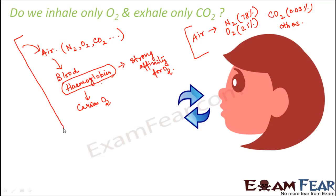What we inhale is not only oxygen but a mixture of gases. Since our body needs oxygen, it will selectively take oxygen. What happens to the other gases? All the other small amounts of gases present in the inhaled air go out while breathing out, because when we breathe out it is not only carbon dioxide being exhaled — it also contains gases like nitrogen that were not used by our body.